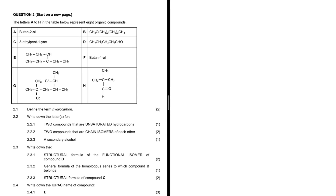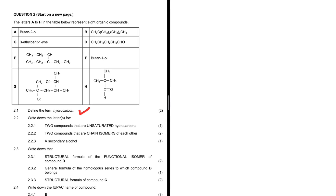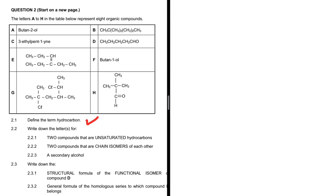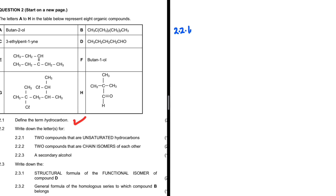Define the term hydrocarbon — that is question 2.1. A hydrocarbon is an organic compound that consists of only hydrogen and carbon. Only hydrogen and carbon — that is a hydrocarbon.